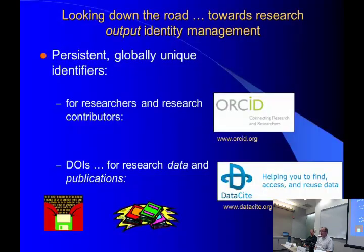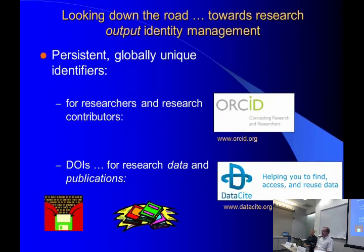We've talked about one form of a persistent and globally unique identifier — the ORCID — for researchers and contributors. There's something else we're working on in the library, looking further down the road: DOIs have long been assigned to journal articles, but there's no reason why they shouldn't be assigned to other research outputs like a slideshow, a research data set, or a video recording, so those outputs become as unambiguously and easily citable as a journal article.